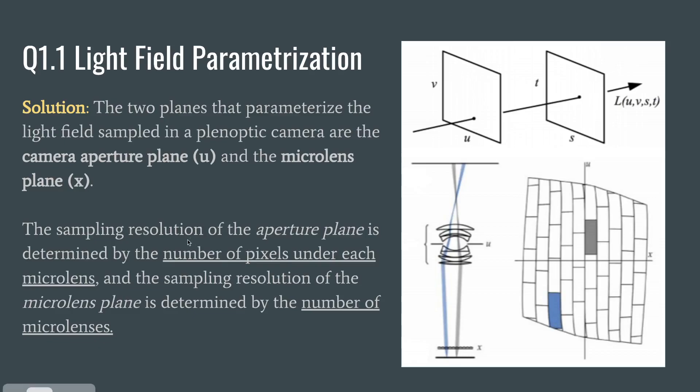The sampling resolution of the aperture plane is determined by the number of pixels under each microlens. Each microlens would be like one of these bumps, and the number of pixels that are within this bumpy space will determine the resolution of the aperture plane.